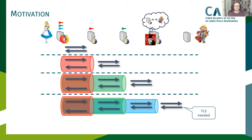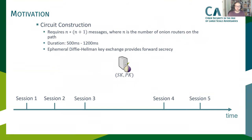But as you can see, the circuit construction process is not really efficient. We need a lot of messages to establish all these keys — we need N times N plus 1 messages, which means for a path of standard length 3, we need 12 messages. And if the latency between the hops is 100 milliseconds, then the duration of the whole circuit construction process is 1200 milliseconds.